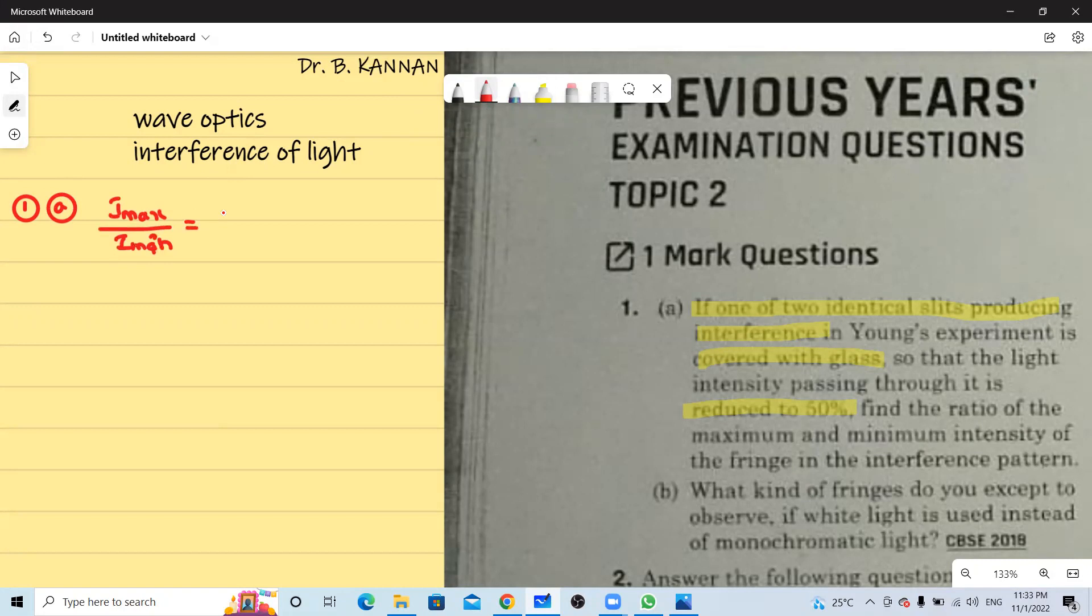So the formula for this is A1 plus A2 the whole square divided by A1 minus A2 the whole square. A1 and A2 are the amplitudes of the two interfering waves.